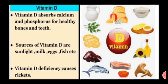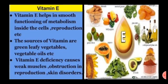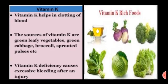Deficiency of Vitamin D causes rickets — softening of bones, causing pain and fractures. Vitamin E helps in smooth functioning of metabolism inside the cells, reproduction, and maintaining efficiency of muscle cells; sources are green leafy vegetables, wheat germ, tender leaves, and vegetable oils; deficiency causes weak muscles, obstruction in reproduction, and skin disorders. Vitamin K helps in clotting of blood; sources are green leafy vegetables, green cabbage, broccoli, and sprouted pulses; deficiency causes excessive bleeding after an injury.